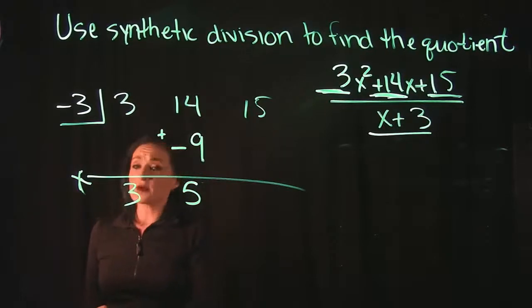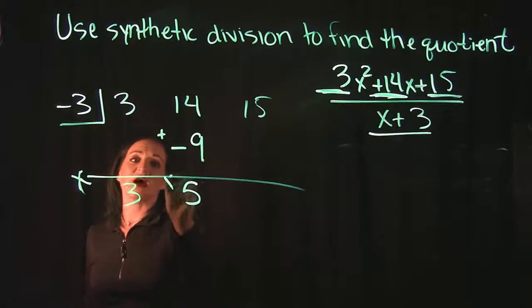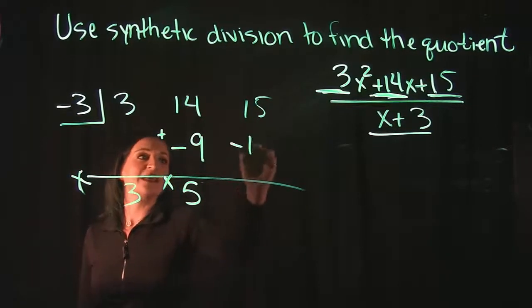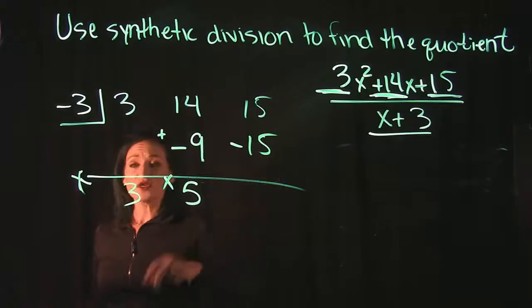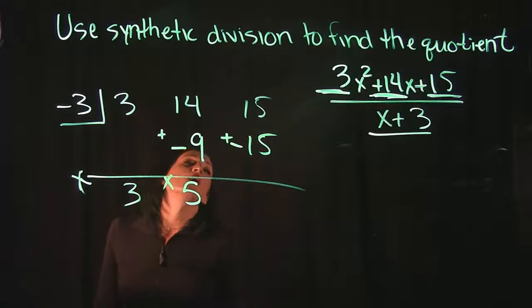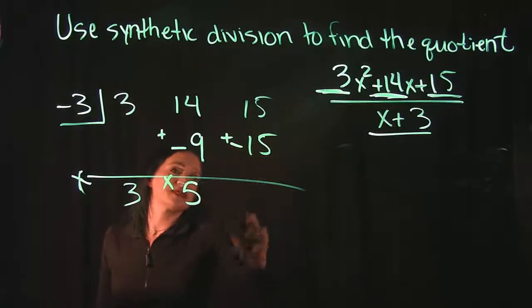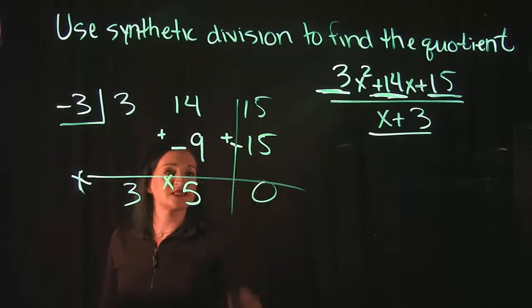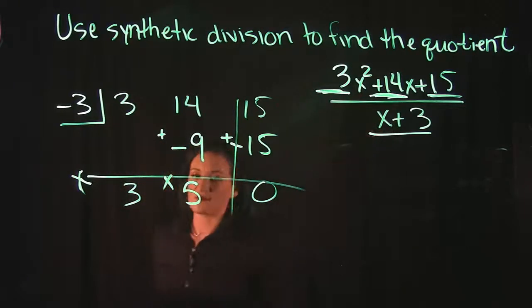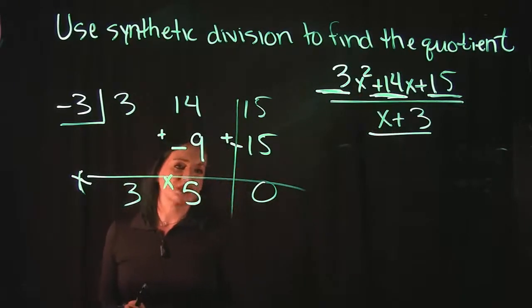All right, and then we're just going to repeat this. We have a 5, let's multiply it to our divisor which is a negative 3. So 5 times negative 3 is a negative 15. So the result you always put in the next column, and then you add. When you add that 15 plus negative 15, you get a 0. Now we already tested in the beginning when we plugged in that negative 3, we saw that we were going to get a 0, which means it just does divide out evenly.